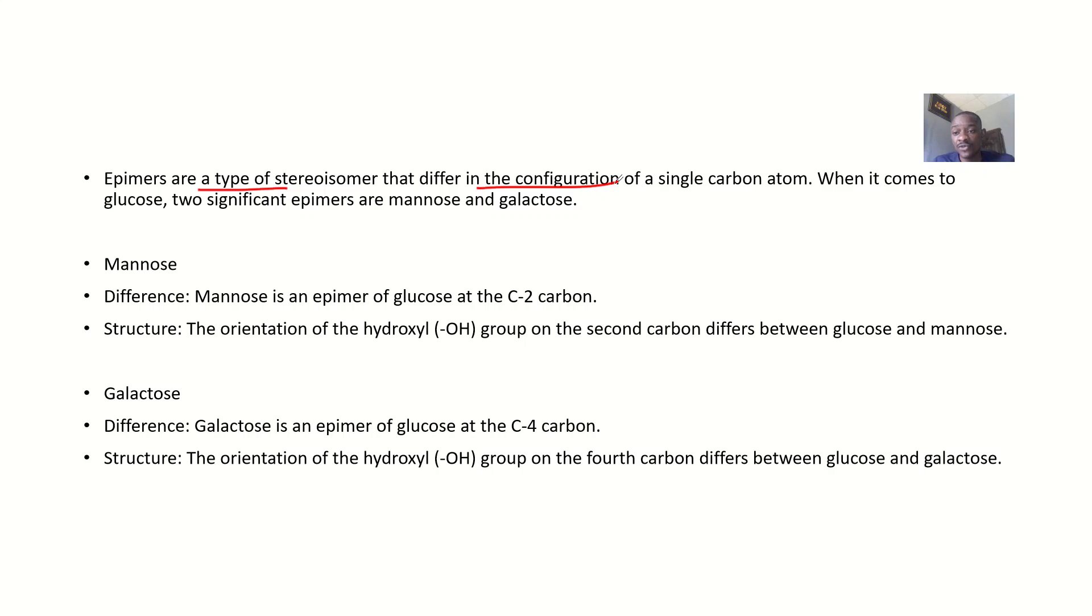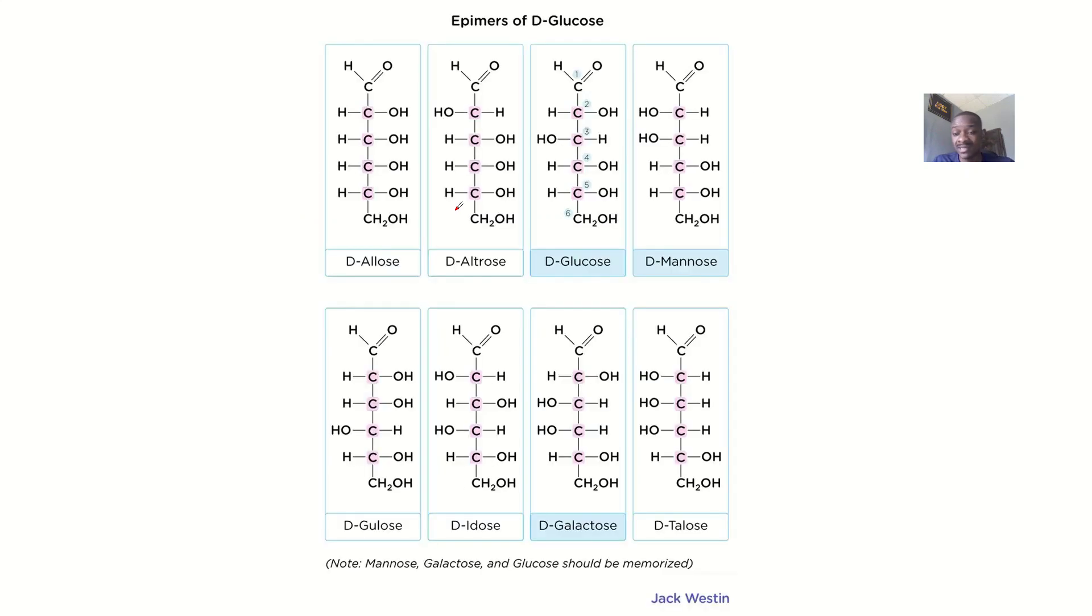When it comes to glucose, two significant epimers of glucose actually exist: that's mannose and galactose. I have mannose here, I have galactose. Those are epimers. Just forget any other thing you see on this screen. We'll be focusing on mannose and galactose.